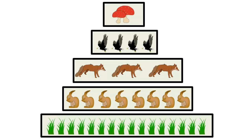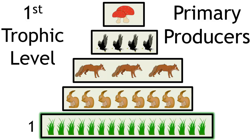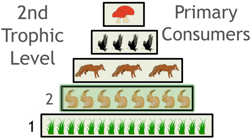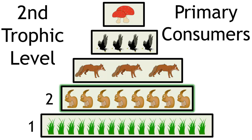Now let's look at the trophic levels in this community. The first trophic level is the primary producers, the grass. Level 2 is the primary consumers, which is the rabbits.